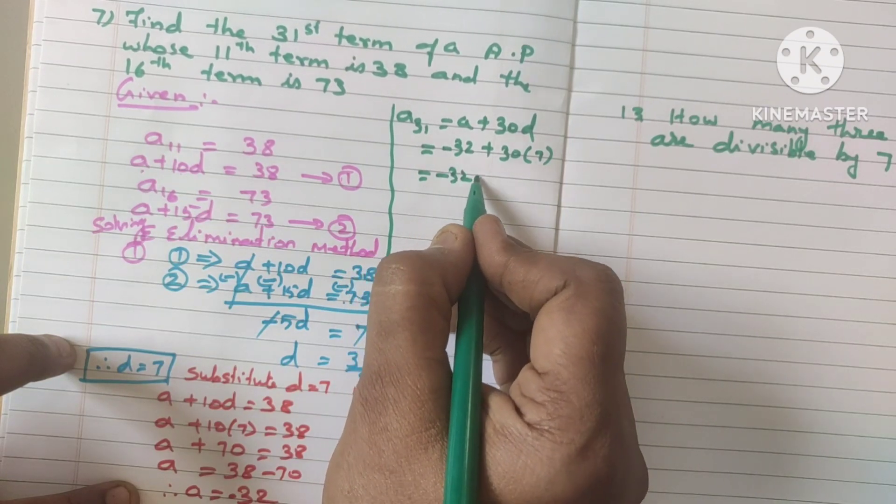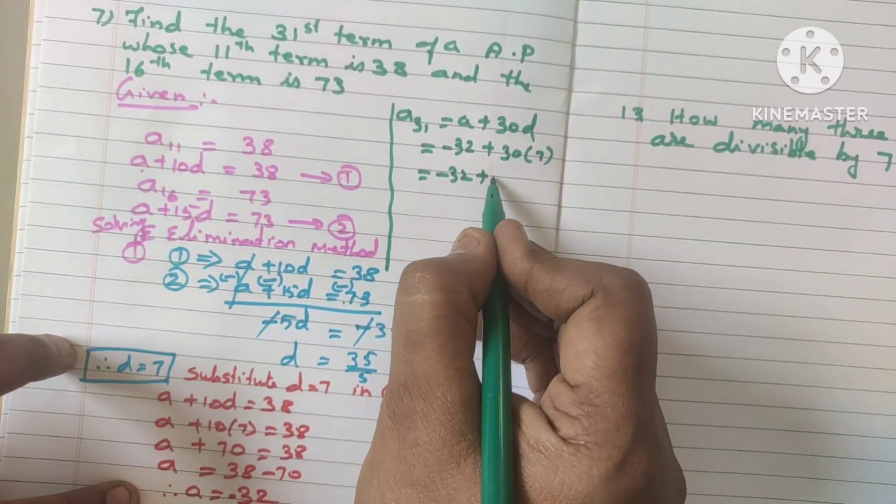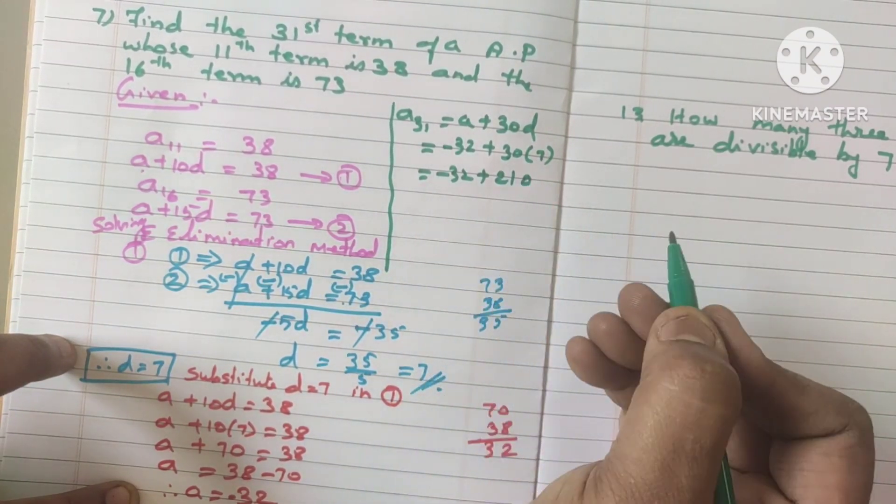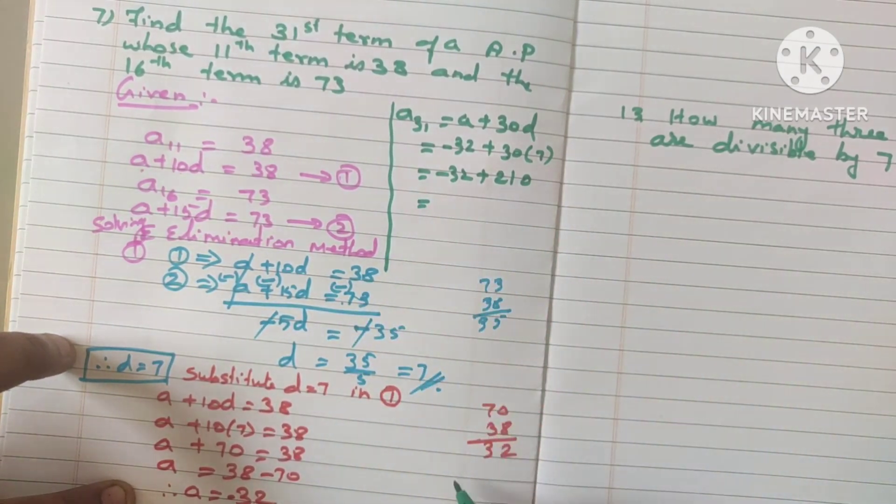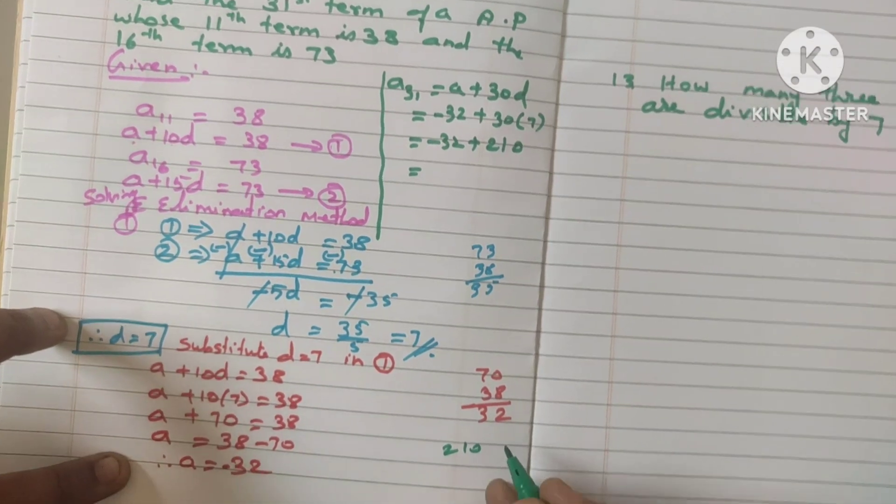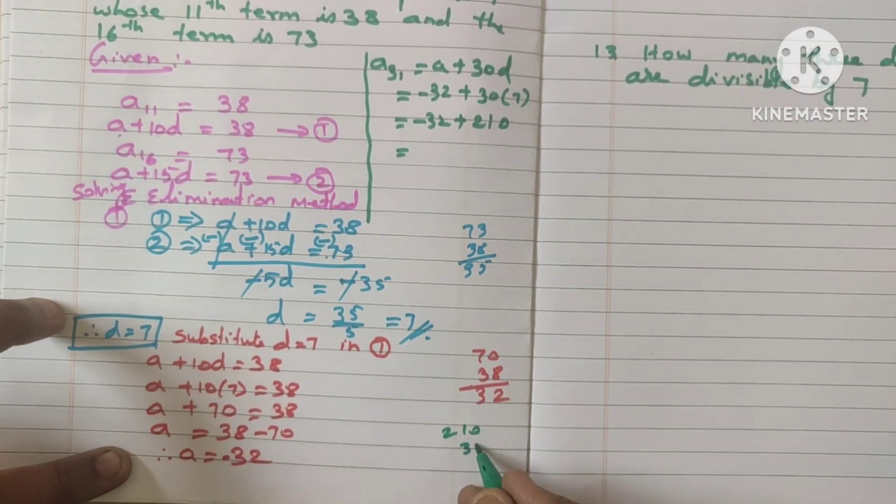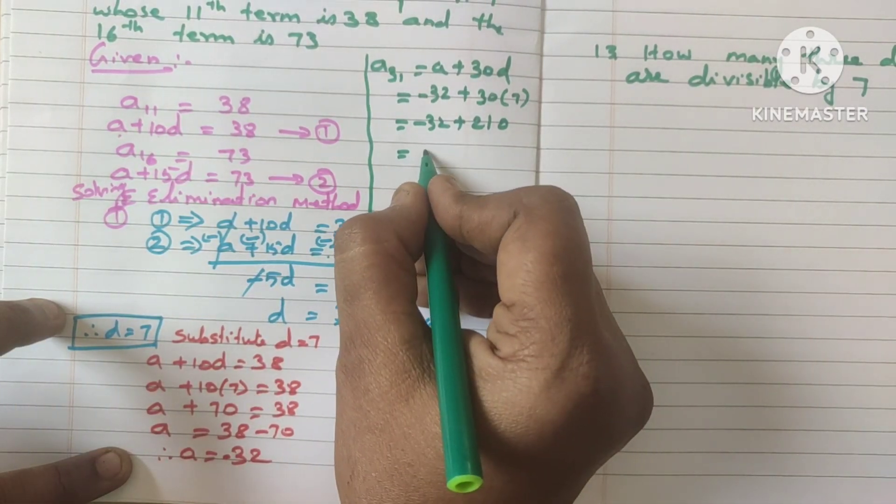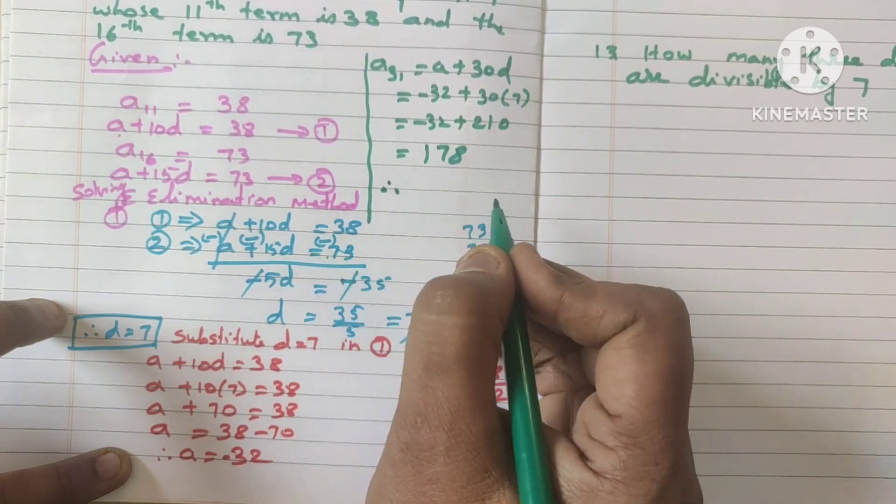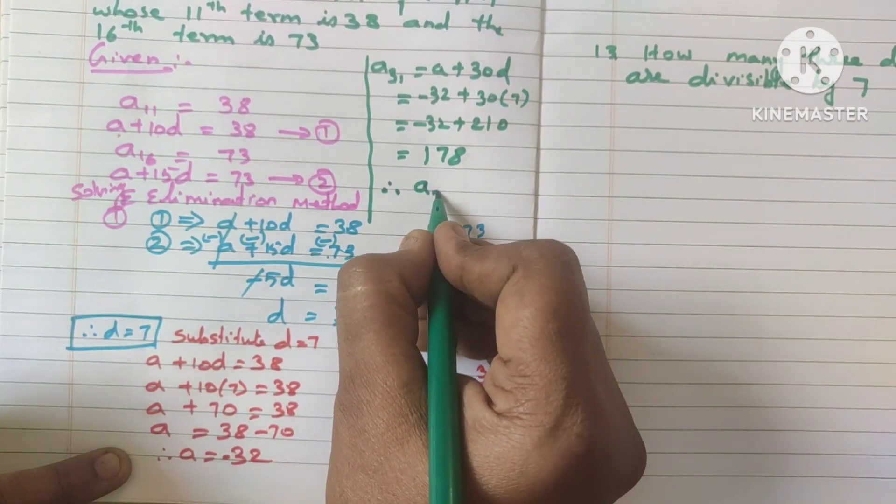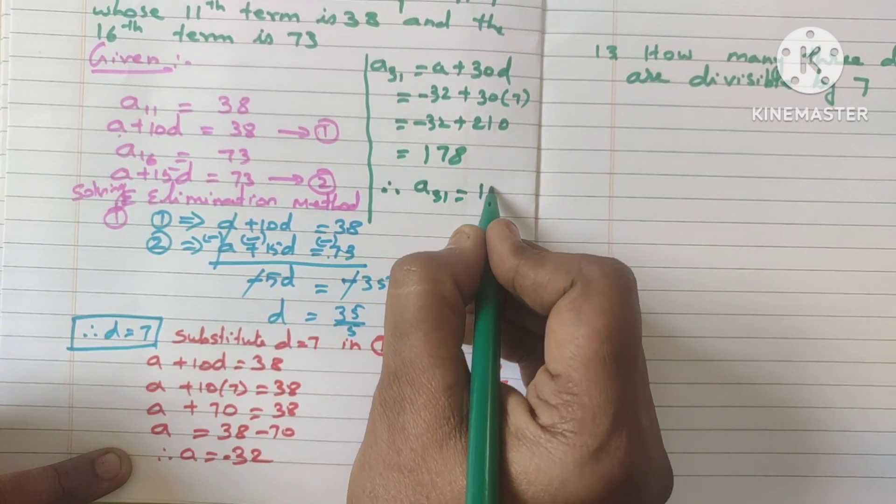This will become minus 32. Plus 3 sevens are 21. So one more 0, 210. If you subtract 210 minus 32. 8, 7, 1. 178. So 178. Finally, highlight the answer. Therefore, A31 is equal to 178.